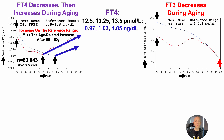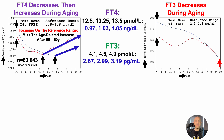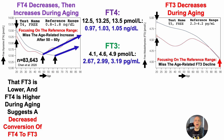For free T3, the reference range is 2.3 to 4.2 picograms per milliliter. After converting the graph data, we get a range of 2.67 to 3.19 picograms per milliliter. So once again, all of these values are within the reference range — and if we only focused on the reference range, we would miss the age-related free T3 decline.